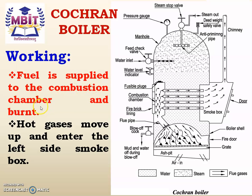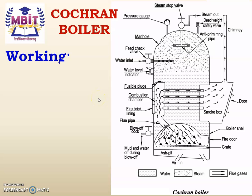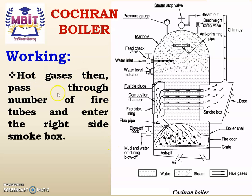Fuel is supplied to the combustion chamber and burned. Through the fire door, the fuel is supplied and burning is carried out. The hot gases generated move up and enter the left-hand side smoke box. These hot gases then pass through the number of fire tubes and enter the right-hand side smoke box. The left-hand side smoke box is also known as the extended combustion chamber.